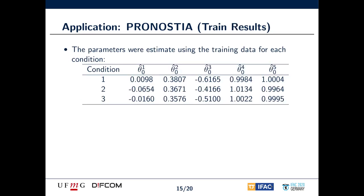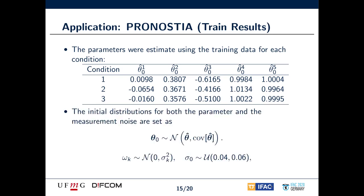For each of the three operating conditions of the Prognostia platform, two training datasets are provided. We use them to find the initial degradation model's parameters through the Levenberg-Marquardt algorithm. We then use the parameters covariance matrix to define the parameters' prior distributions to be used in the particle filter. We also set initial distributions for the measurement noise.